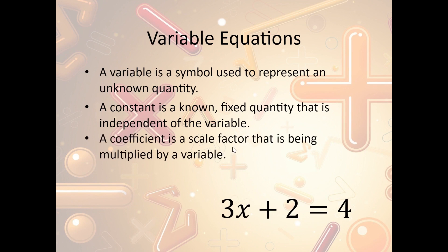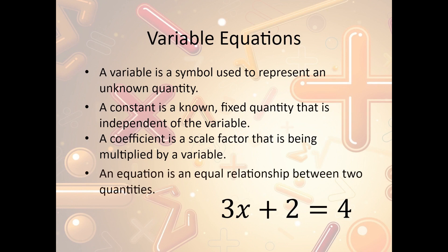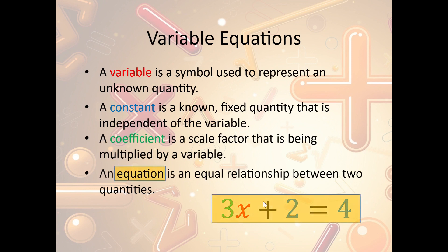And a coefficient is a scale factor — it's what we're multiplying the variable by. The equation represents the entire relationship between the two quantities. So in this case, the variable is x. The constants are the 2 and the 4. The coefficient is 3. And the equation is the entire thing — we're saying that everything on this side is equal to everything on this side.